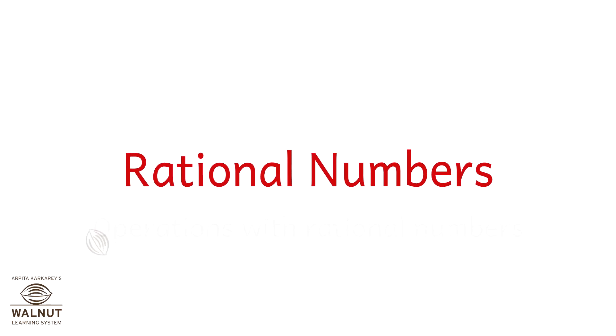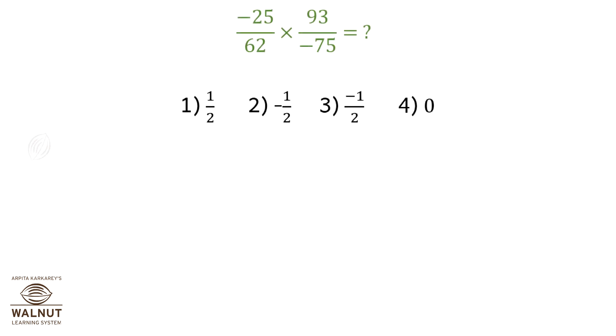Rational Numbers Operations with Rational Numbers. Look at this example: minus 25 upon 62 into 93 upon minus 75 is what? Let's simplify to get the answer.